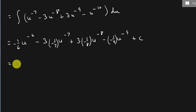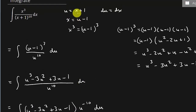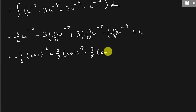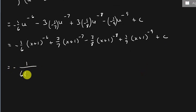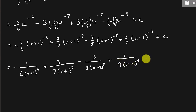So now we have negative 1/6, and I'm going to replace u with x plus 1. That gives us negative 1/6 times x plus 1 to the negative 6, plus 3/7 times x plus 1 to the negative 7, minus 3/8 times x plus 1 to the negative 8, plus 1/9 times x plus 1 to the negative 9, plus C. We can also write those with positive exponents in the denominator: negative 1 over 6 times x plus 1 to the 6th, plus 3 over 7 times x plus 1 to the 7th, minus 3 over 8 times x plus 1 to the 8th, plus 1 over 9 times x plus 1 to the 9th, plus C.